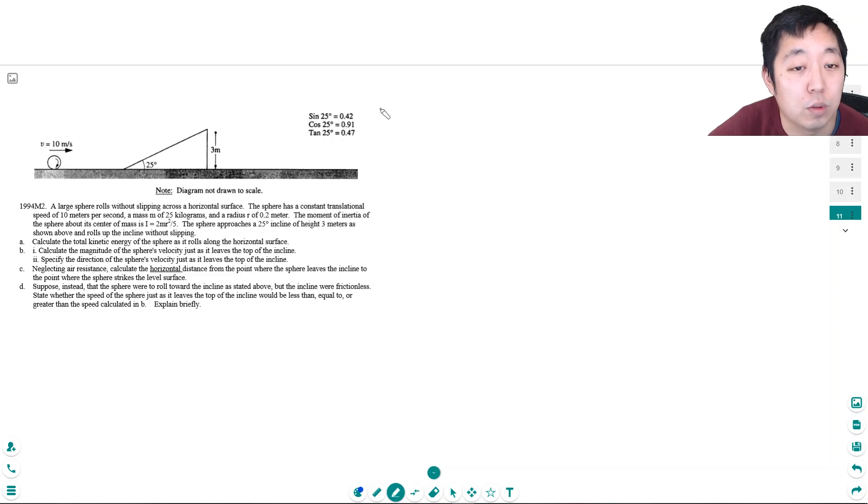Calculate the total kinetic energy of the sphere as it rolls along the horizontal surface. Okay, so the total kinetic energy has rolling energy and it has just translational energy. So I say the total kinetic energy is one half mv squared plus this is linear kinetic energy and then I have rotational kinetic energy, one half i omega squared. Okay, so the mass is 25 kilograms. It's moving at 10 meters per second. Plus one half times its rotational inertia is two fifths mr squared. m is 25 kilograms. r is, what is the radius of the sphere, 0.2 meters squared. So that's i.